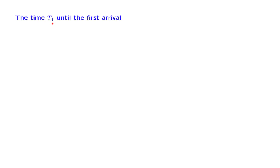T1 is a continuous random variable, because the Poisson process runs in continuous time, and therefore it has a PDF. But instead of finding the PDF directly, we will first find the CDF of this random variable.